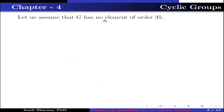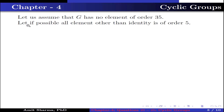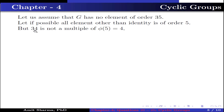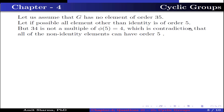Now let us assume that G has no element of order 35. Let, if possible, all elements other than identity have order 5. But 34, which is the number of non-identity elements, is not a multiple of 5, which is a contradiction that all non-identity elements can have order 5.